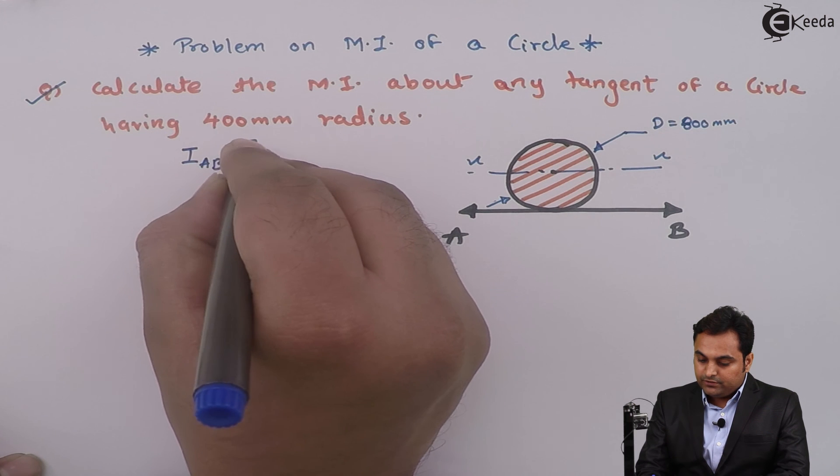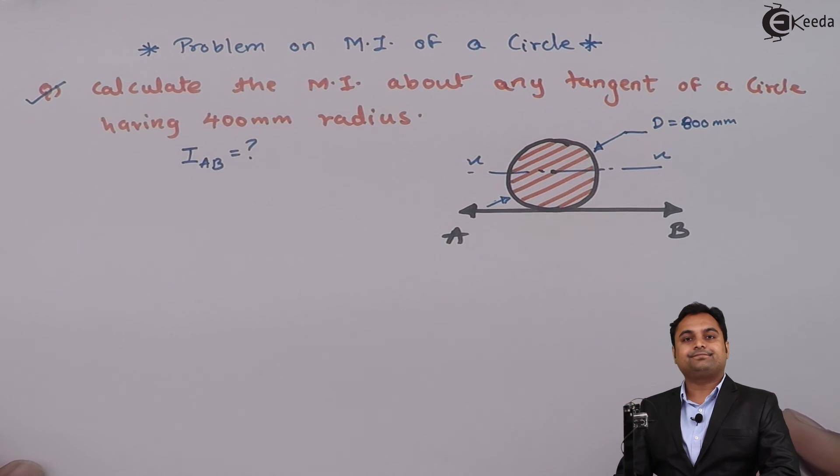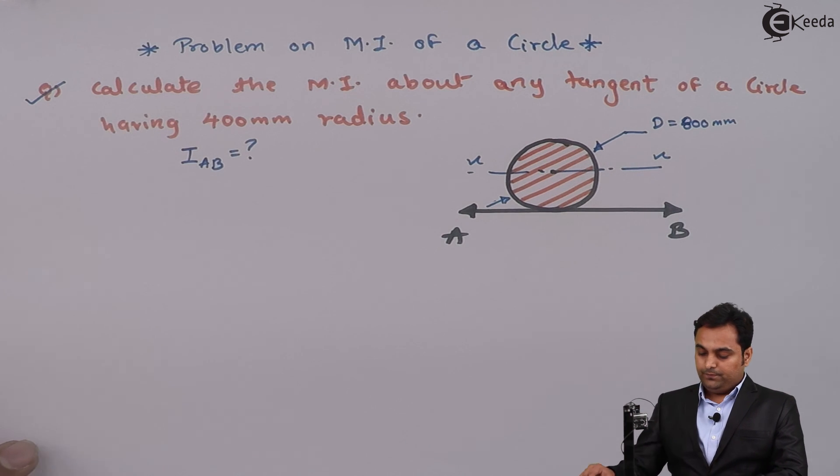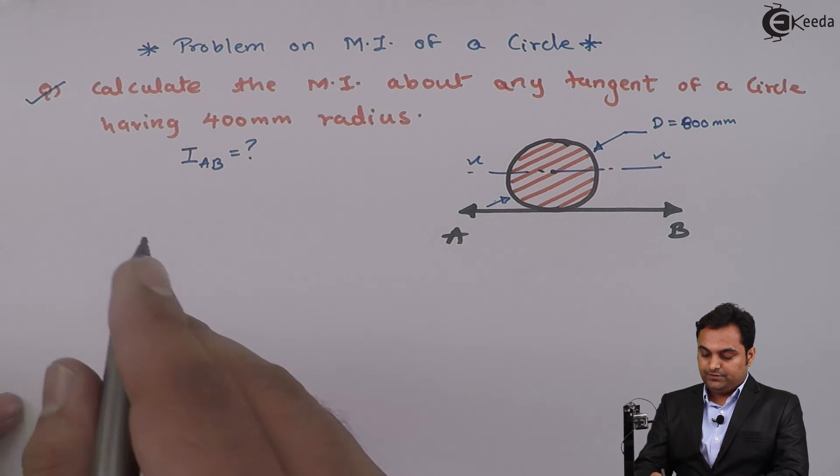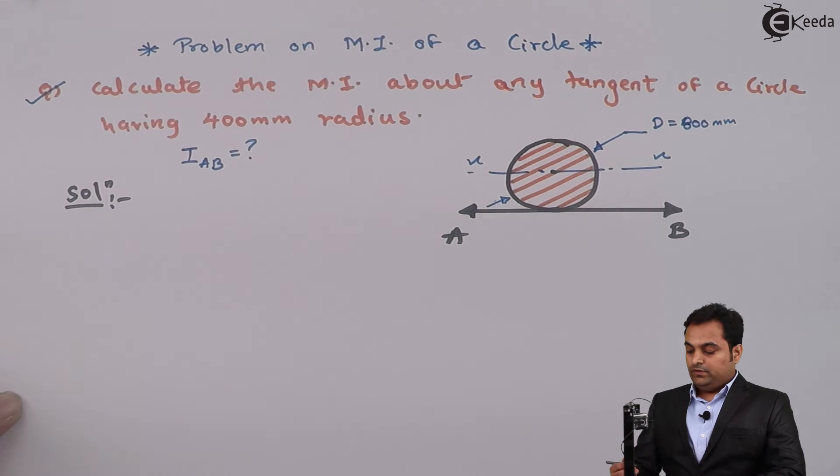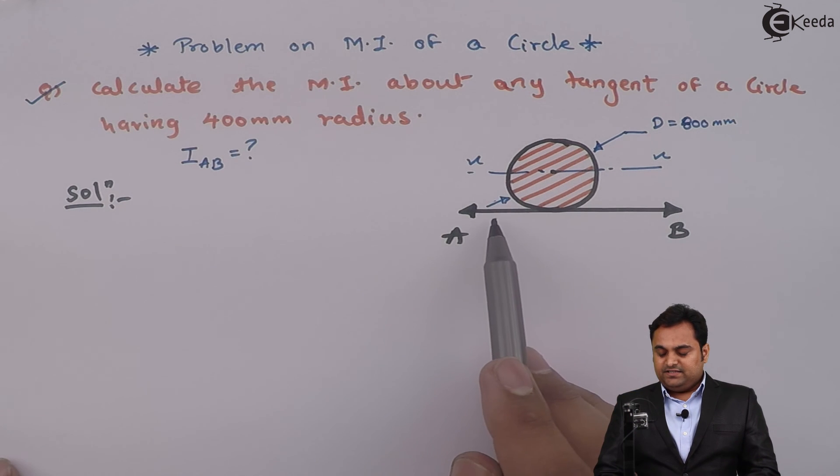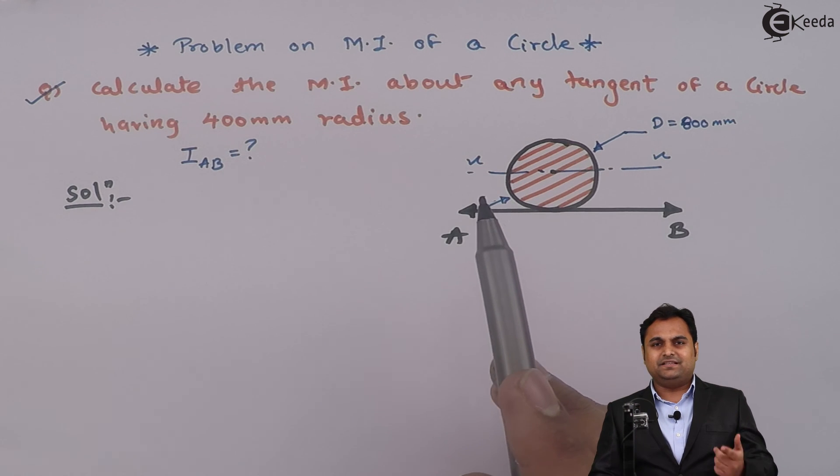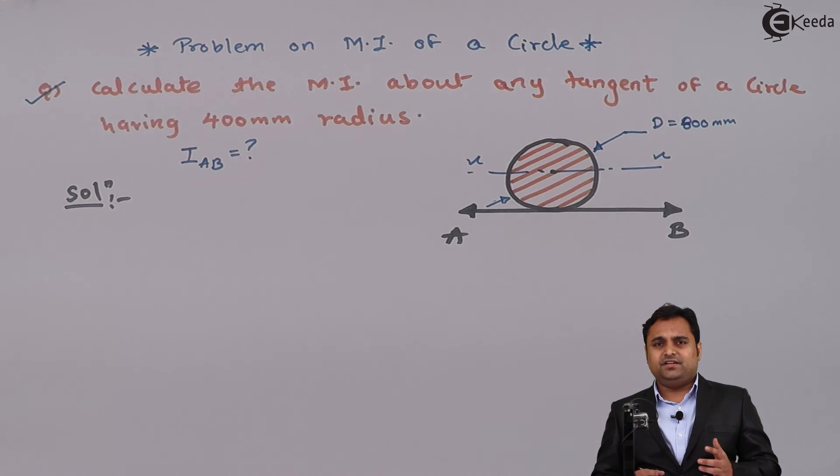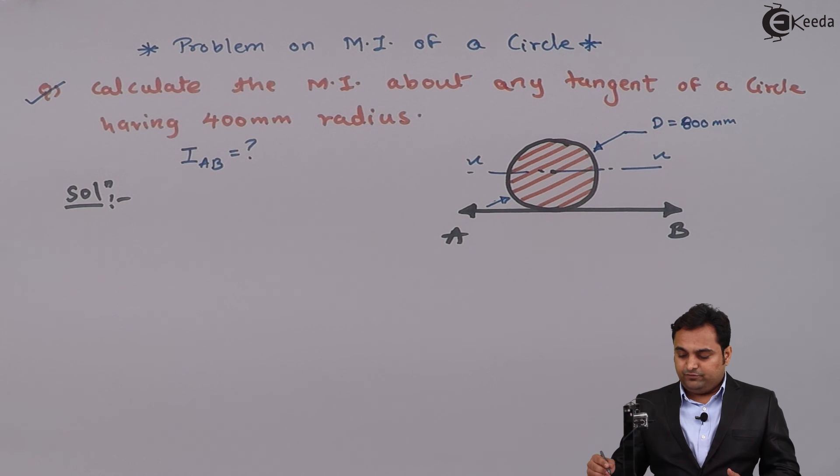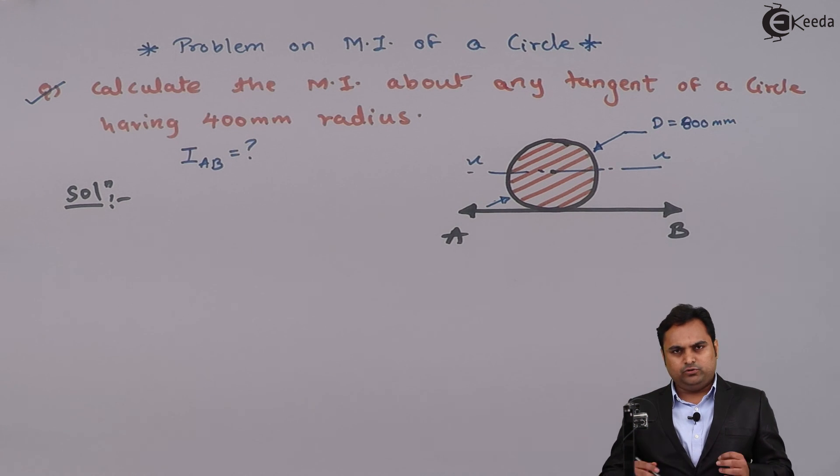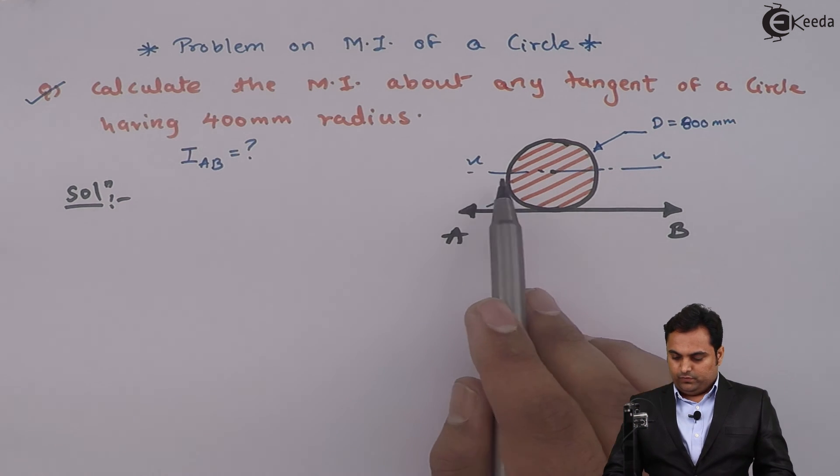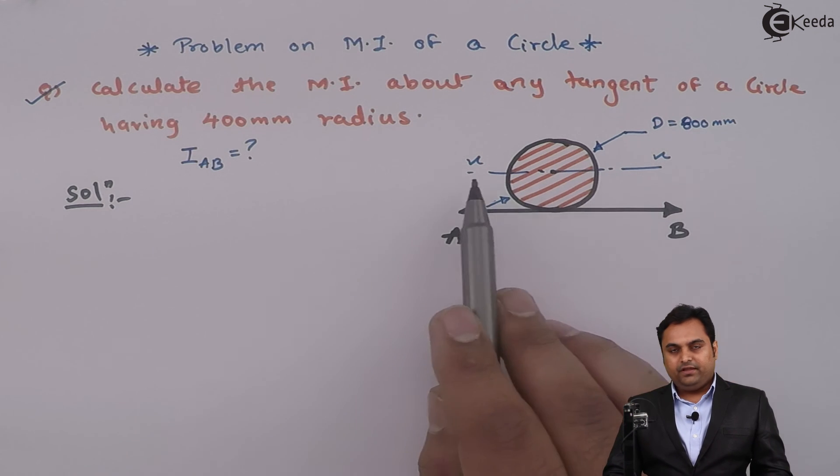So the question is we have to find moment of inertia about this tangent AB. So now let us try to get this solution. Here I can see that the tangent AB is parallel to x-axis, so we can use parallel axis theorem because that theorem is used when we have to calculate moment of inertia about any axis which is parallel to the centroidal axis.